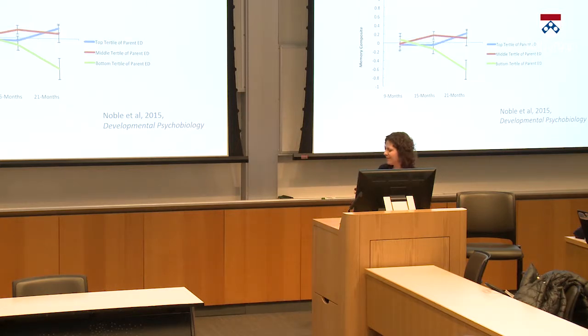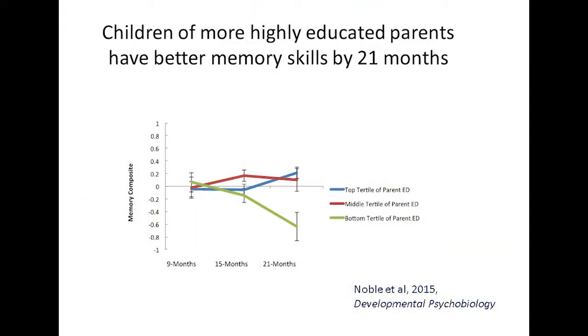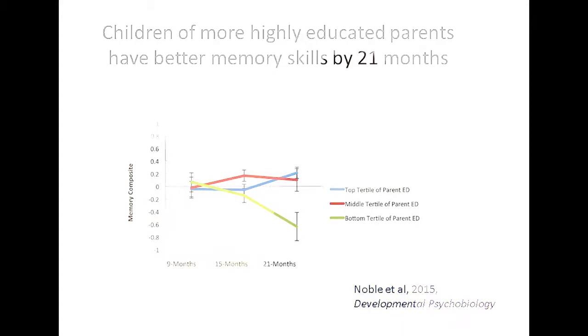This difference is not just statistically significant but clinically significant as well — a large effect size of about 0.8 standard deviations, equivalent in magnitude to about 12 IQ points, and this before children even turn two. We found the same pattern for children's memory development across this age range, with about 0.8 standard deviations of difference by 21 months.